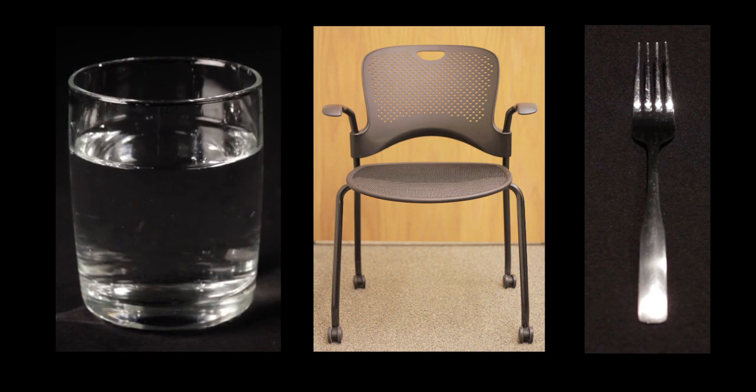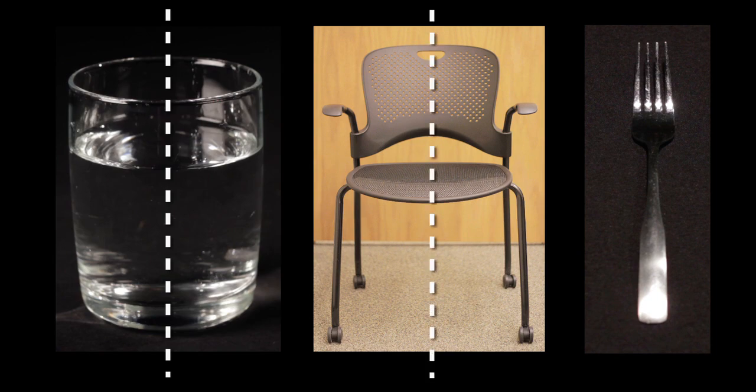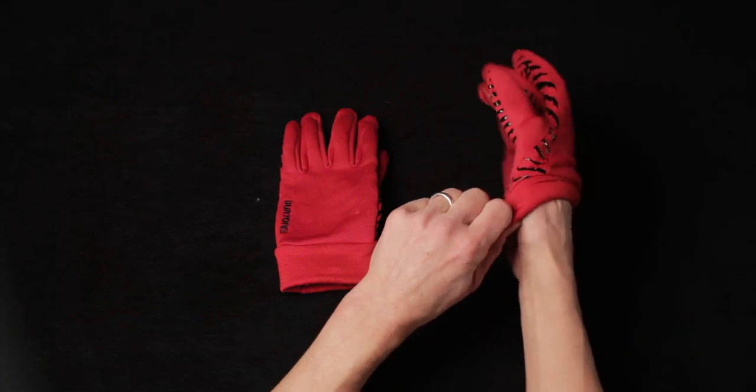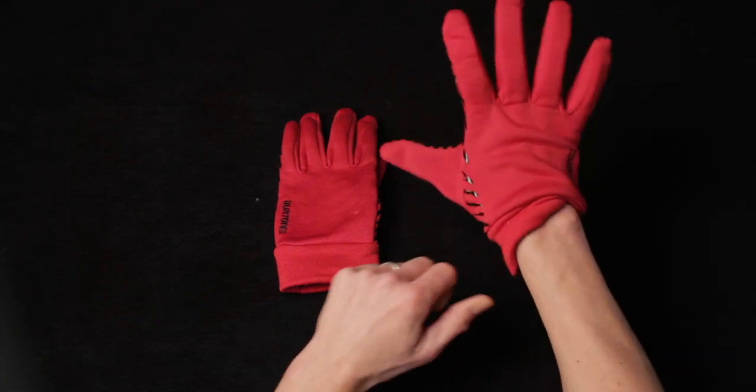The planes of symmetry are here, here, and here. Notice that there is no way to divide a right-handed glove into two equal halves, which is why the glove is chiral.